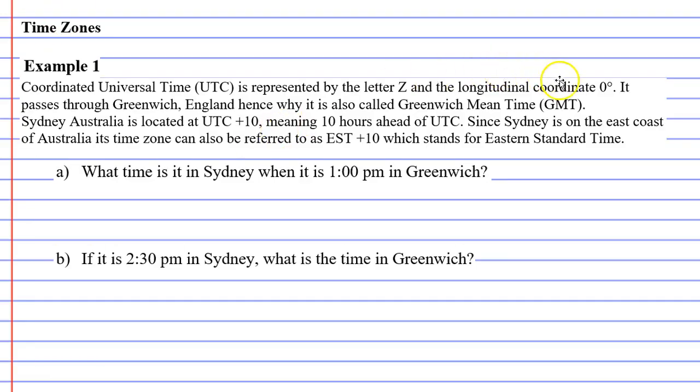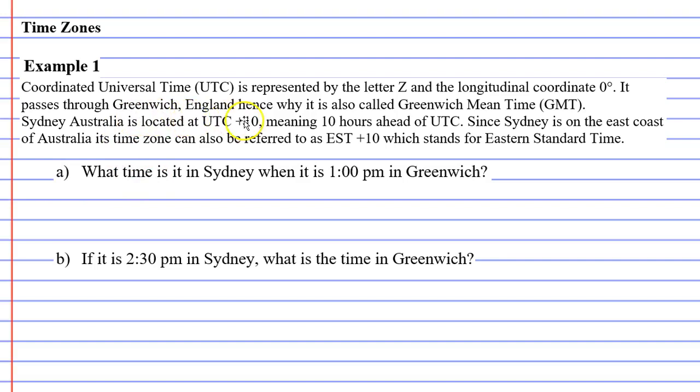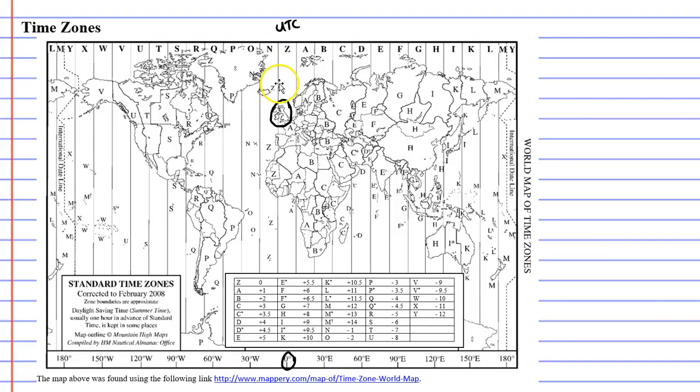Next it says it passes through Greenwich, England. So this is England here, and Greenwich is where the zero degrees passes through, and it's also where coordinated universal time passes through it as well. And then it says hence why it is called Greenwich Mean Time GMT. So sometimes it'll say UTC, and sometimes it'll say GMT for Greenwich Mean Time.